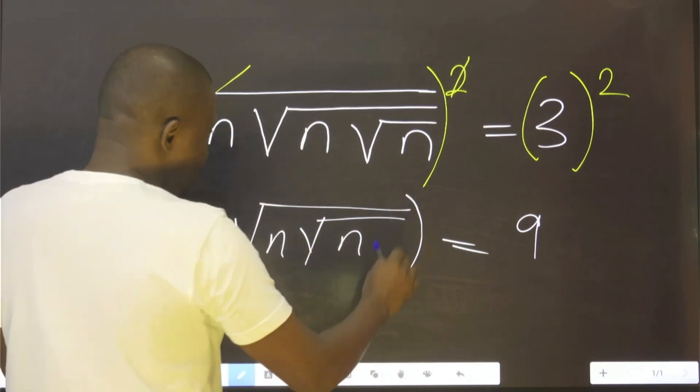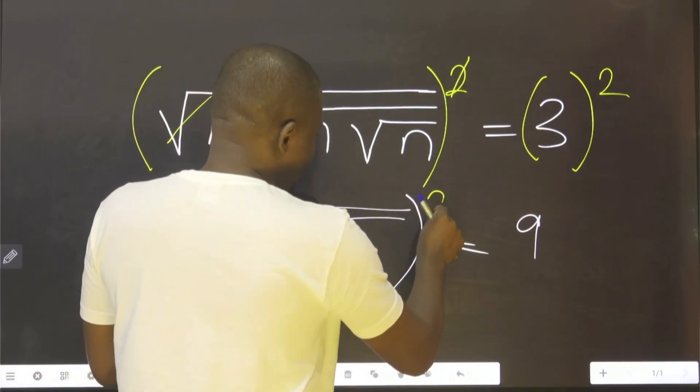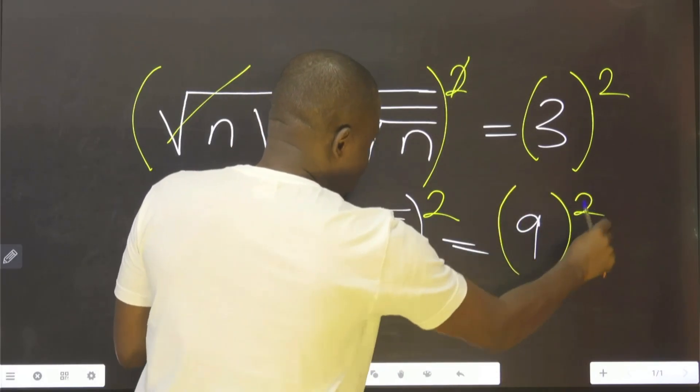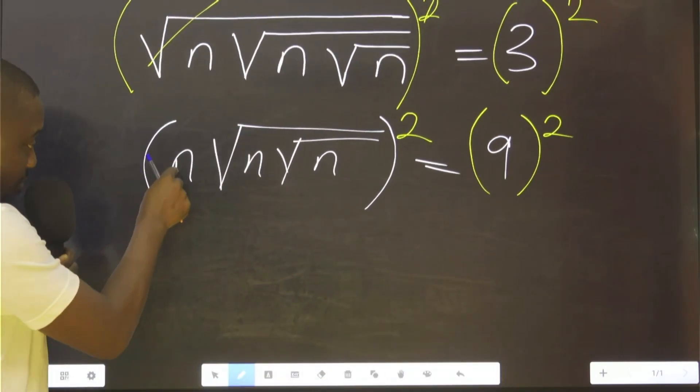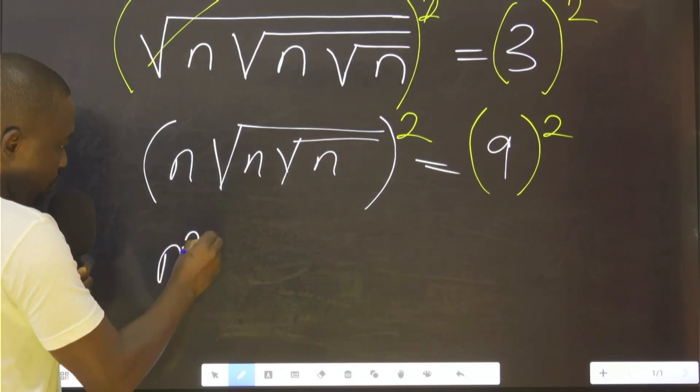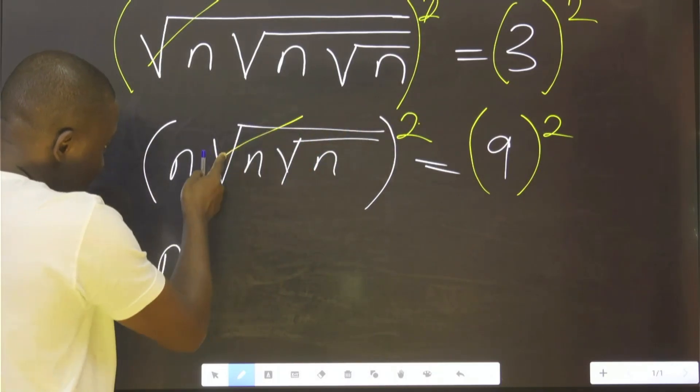So what we're going to do again, we square both sides again. If you square here now, it means n raised to the power 2, that this will strike out this.